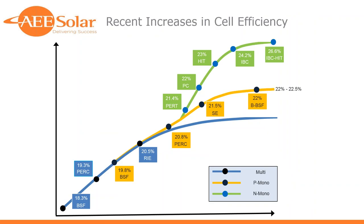This is George McClellan with REC. I appreciate everyone logging in today. What I want to talk about is why we've had to make some of the changes in module technology. Looking at the lower left-hand corner of the chart, you can see efficiency going up on the vertical axis over time. A while back, the typical solar cell was well below 18% — that's called your backside field module, which was being manufactured for a very long time. What we try to do as module manufacturers is increase the power density, give you more watts peak in the same footprint — always trying to increase cell efficiency without driving up the cost of the product.